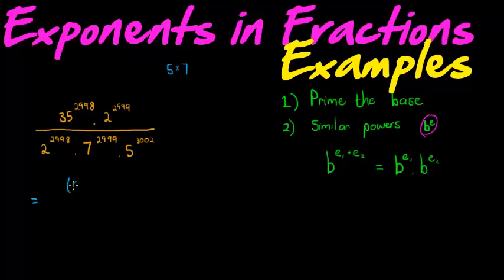Okay, so this can be 5 times 7 to the power of 2998 times 2 to the power of 2999 divided by 2 to the power of 2998, I mean, times 7 to the power of 2999 times 5 to the power of 3002.